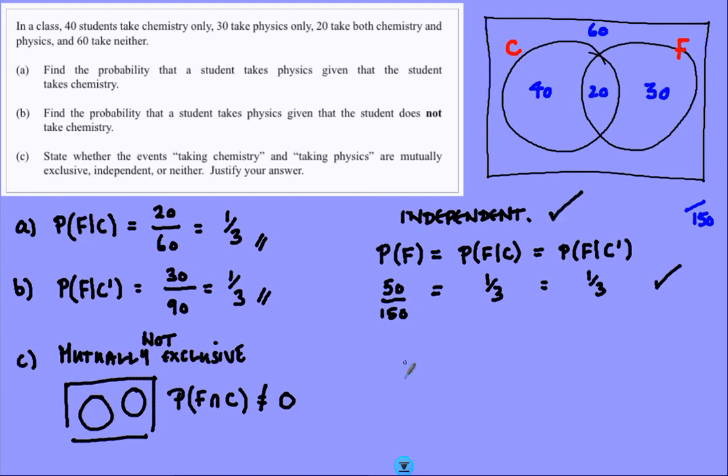We could do other things to show independence as well. We could, for example, show that the probability of the overlap, if we are independent, then that would be true. Probability of the overlap I think is 20 out of 150. Probability of physics, well that's 50 out of 150. Probability of chemistry, 60 out of 150.